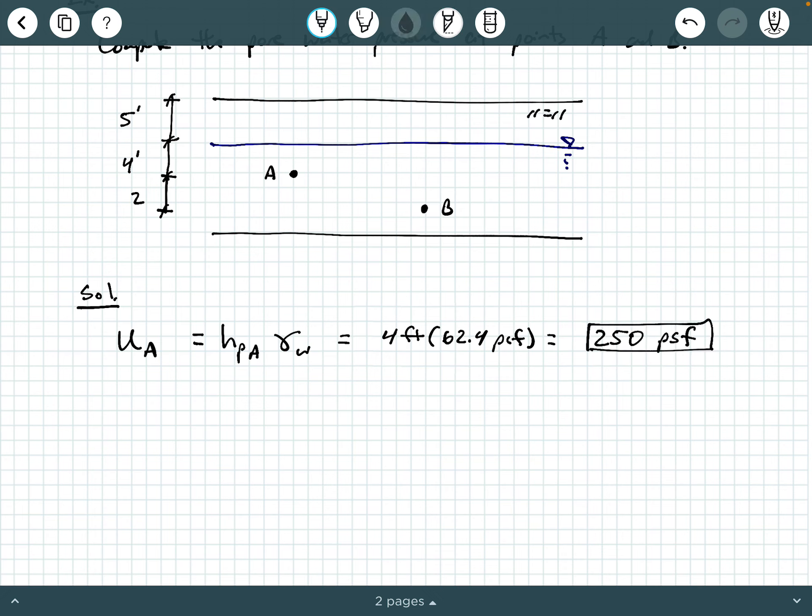So remember, you have feet times pounds per cubic feet. So you're left with pounds per square feet. So to 4 sig figs, this is 249.6 PSF. So I went ahead and rounded to 250 PSF.